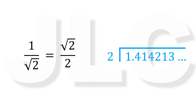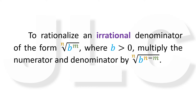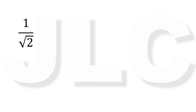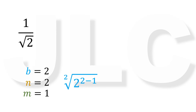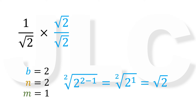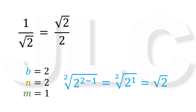Now let us have a general rule on how to rationalize the denominator. To rationalize an irrational denominator of the form nth root of b raised to m, where b is greater than 0, multiply the numerator and denominator by nth root of b raised to n minus m. So for example, if we have 1 over square root of 2, then b equals 2, n equals 2, and m equals 1. So we multiply the numerator and denominator by square root of 2 raised to 2 minus 1, equals square root of 2 raised to 1, equals square root of 2. So we have 1 over square root of 2 times square root of 2 over square root of 2, equals square root of 2 over 2. Therefore, 1 over square root of 2 is equal to square root of 2 over 2.